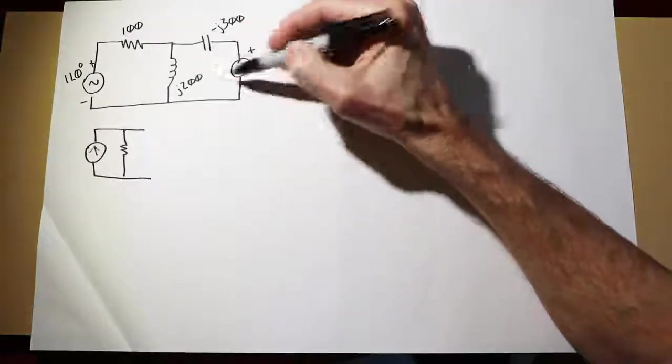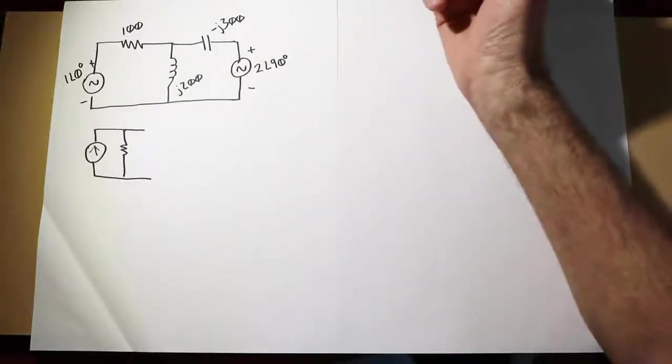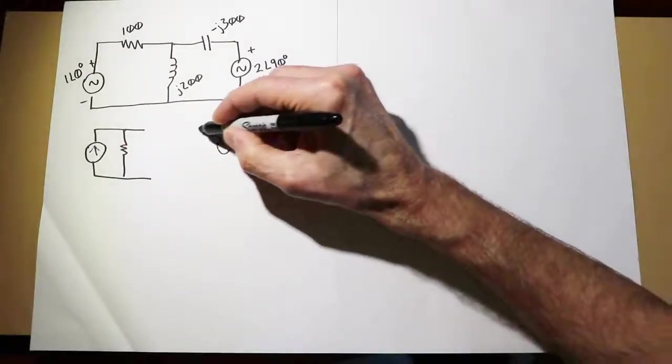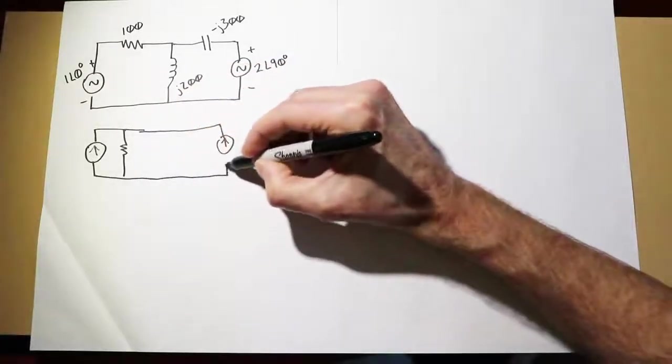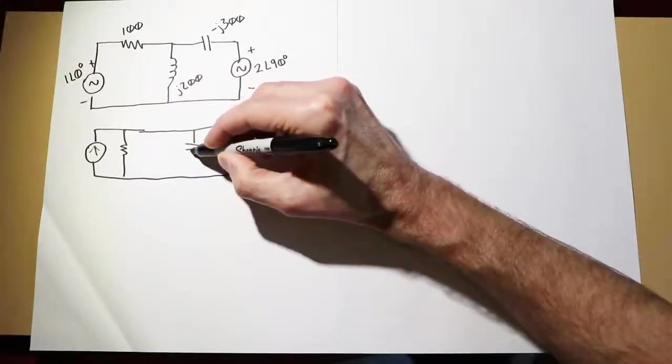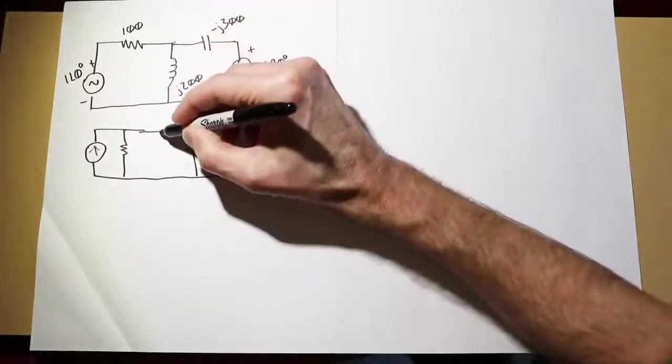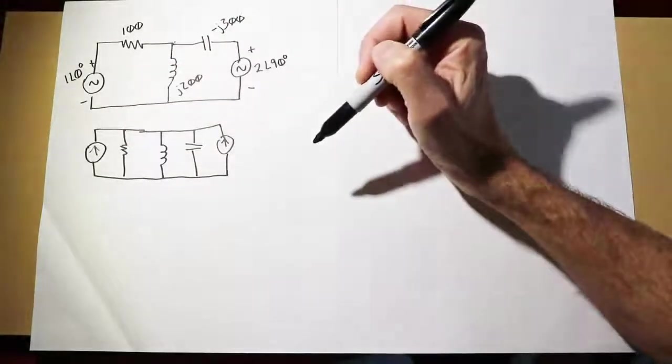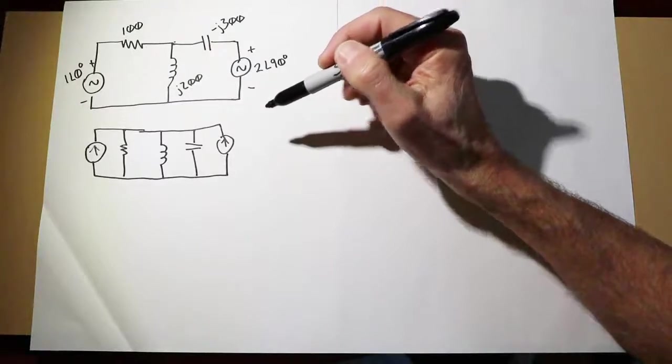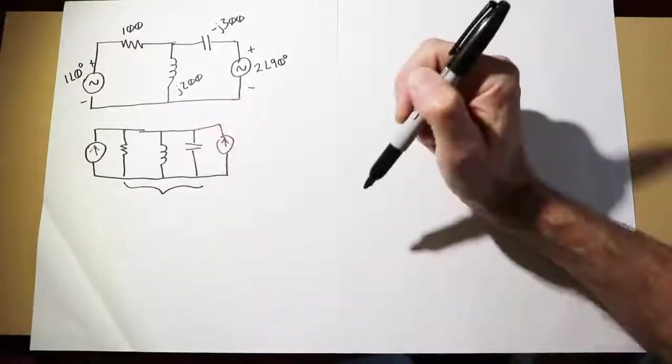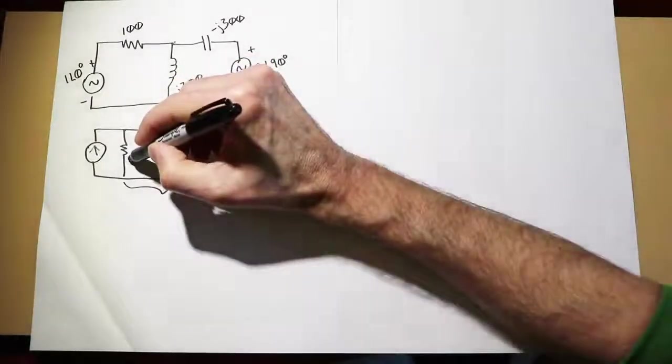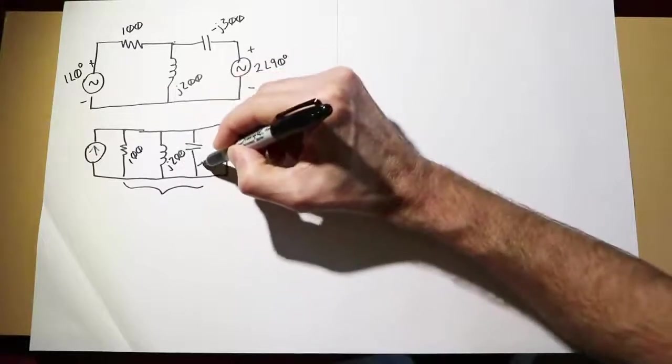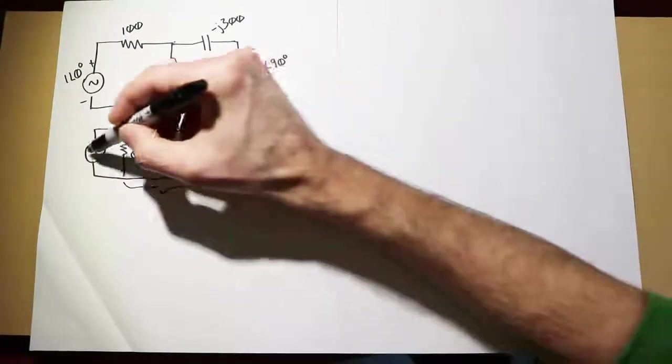The second source and the associated capacitor would also be translated into a current source. Here's the capacitor, and of course the inductor is at that same node. Now, what you would notice is this is a completely parallel circuit. So if we could find the impedance of those three elements, the 100, J200, and minus J300, and then combine the two sources,